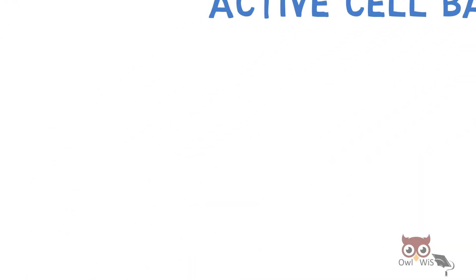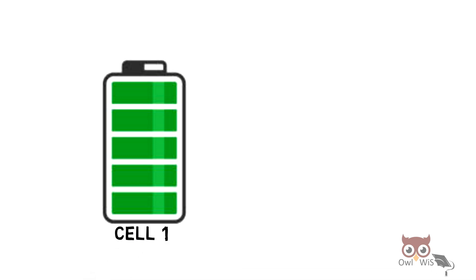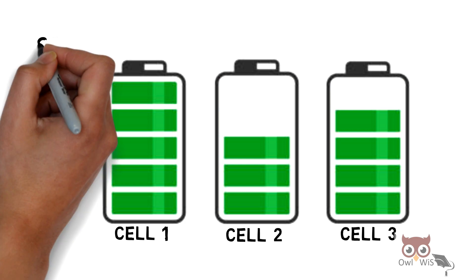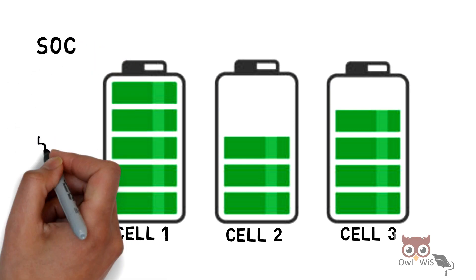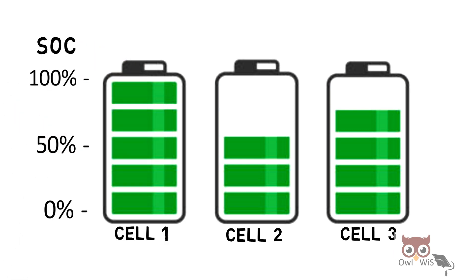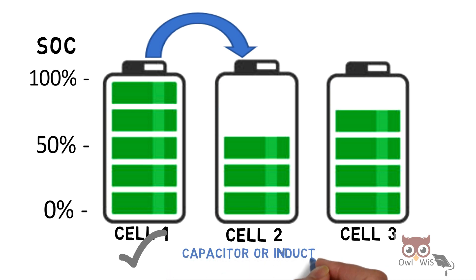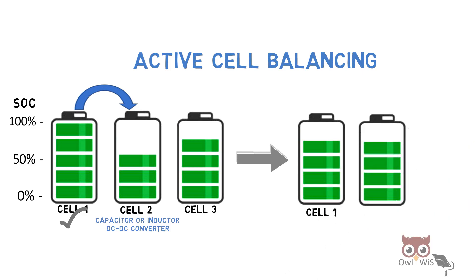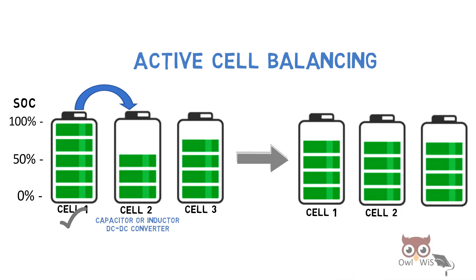Next, active cell balancing: Consider three cells — cell 1, cell 2, and cell 3 — with different state of charge. Cell 1 consists of the highest state of charge and cell 2 consists of the least state of charge. So energy is transferred from cell 1 to cell 2 through a capacitor, inductor, or DC-DC converter. After active cell balancing, there will be three cells with state of charge equal to the average of the three cells.